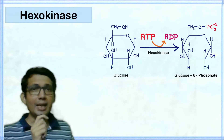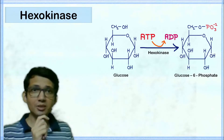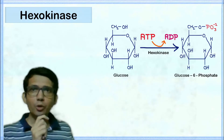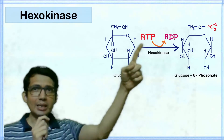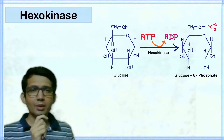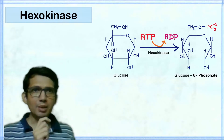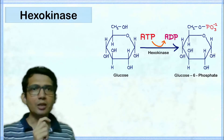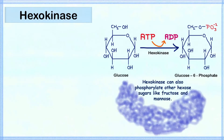Let's talk about the enzyme Hexokinase. Hexokinase is the first enzyme of glycolysis which converts glucose into glucose 6-phosphate using ATP. This enzyme also has the ability to phosphorylate other hexose sugars like fructose and mannose into their respective phosphorylated state.